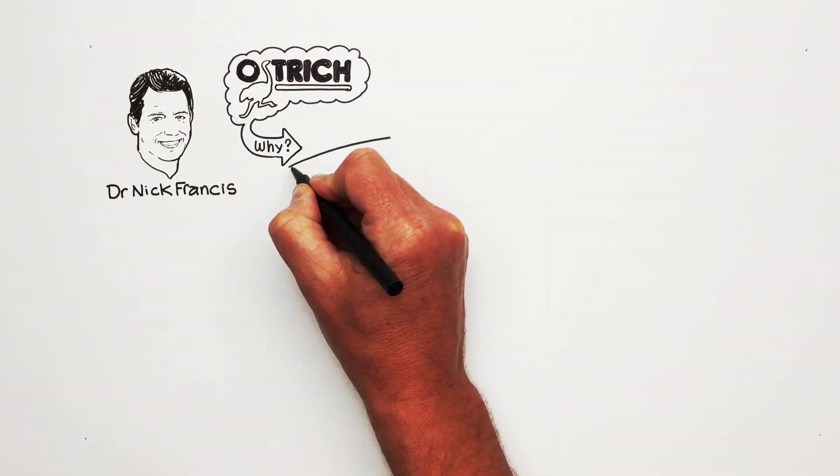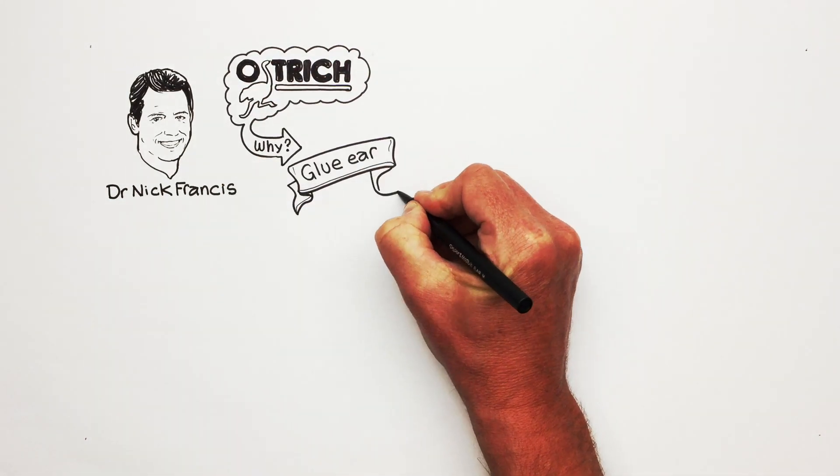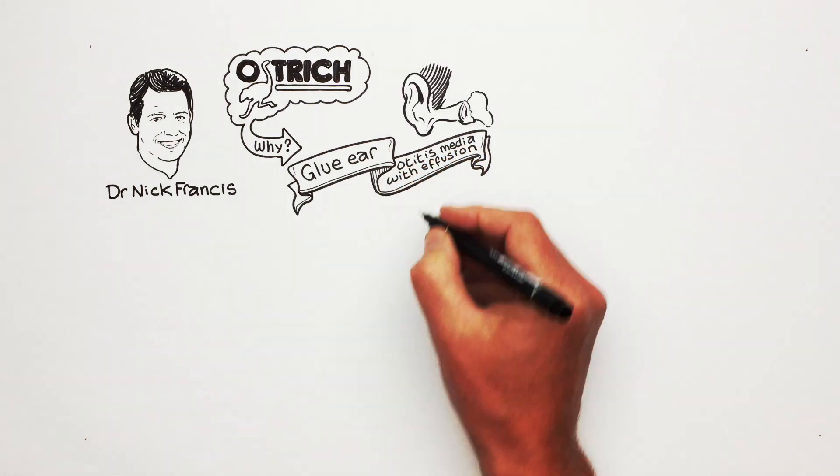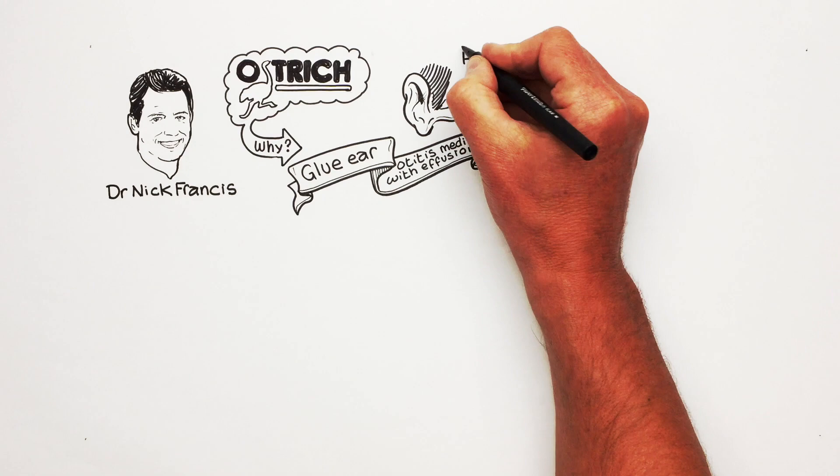So why did we do the Ostrich Study? Glue ear, otherwise known as otitis media with effusion, is a condition where fluid builds up behind the eardrum and causes hearing problems.